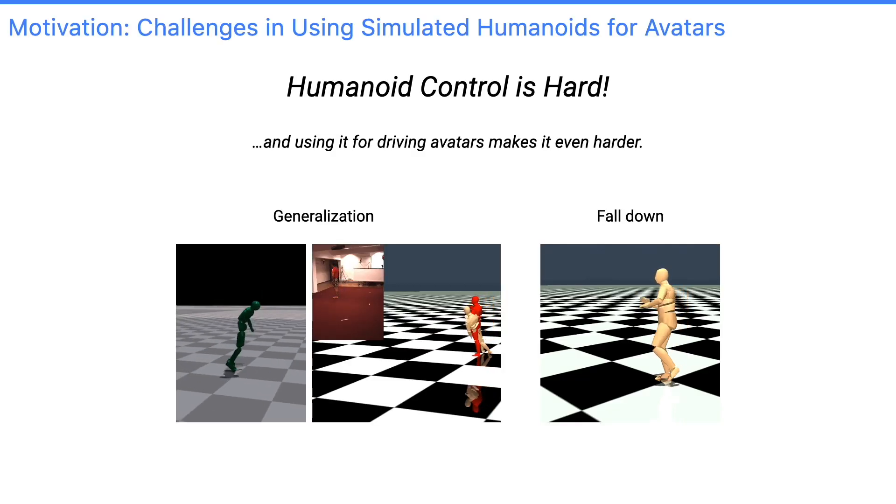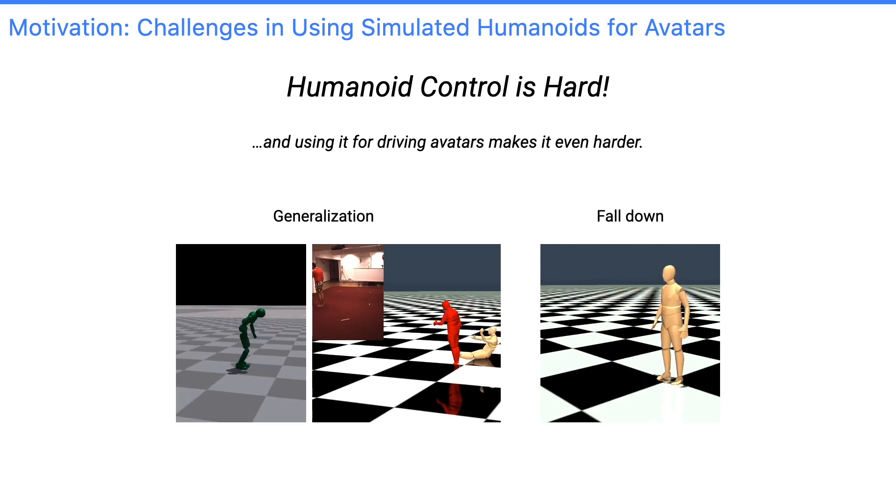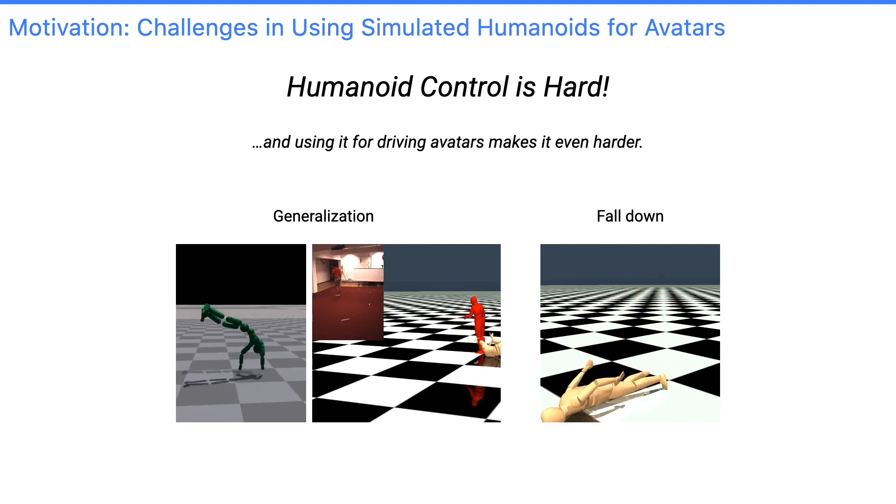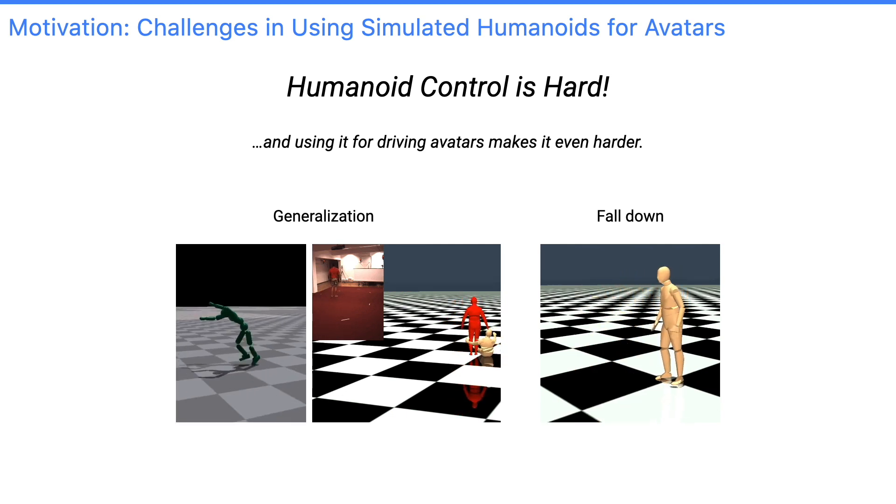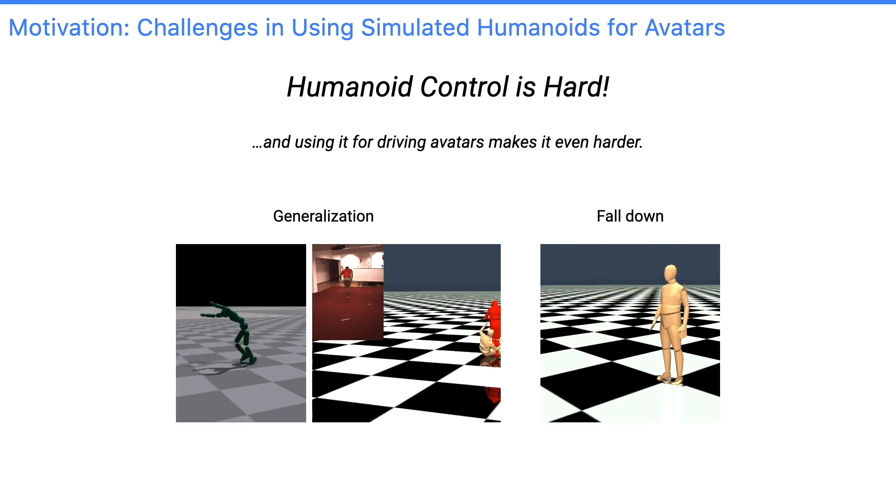Humanoid control is a hard problem, and using humanoid control for avatars makes it even harder. Because now, your humanoid needs to match the input signals, such as videos or language. In this work, we would like to tackle two of the main issues in using humanoid for avatar purposes.